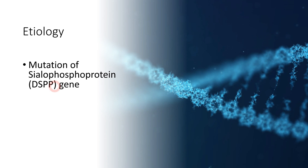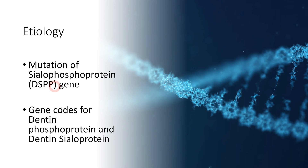The DSPP gene basically codes for dentinphosphoprotein and dentinsialoprotein, both of which are very important for formation of dentine. When this gene is mutated, it leads to dentinogenesis imperfecta.